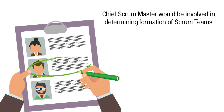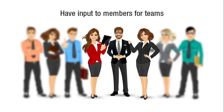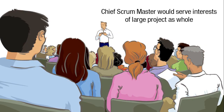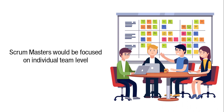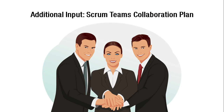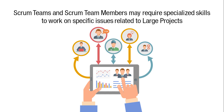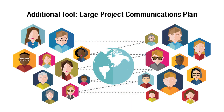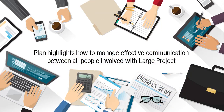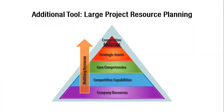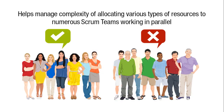For a large project, the chief Scrum master would be involved in determining the formation of the Scrum teams and have input on the members for the teams, serving the interests of the large project as a whole, while Scrum masters remain focused on the individual team level. Additional inputs include the Scrum masters collaboration plan and team specialization — some Scrum teams and team members may require specialized skills to work on specific issues related to large projects. Additional tools include the large project communications plan, which highlights how to manage effective communication between all people involved, and large project resource planning, which helps manage the complexity of allocating various types of resources to the number of Scrum teams working in parallel.